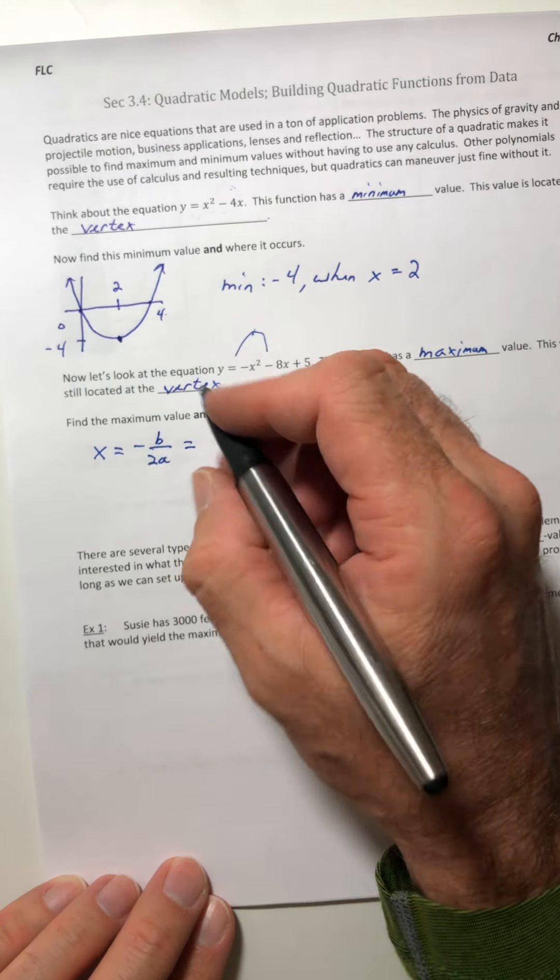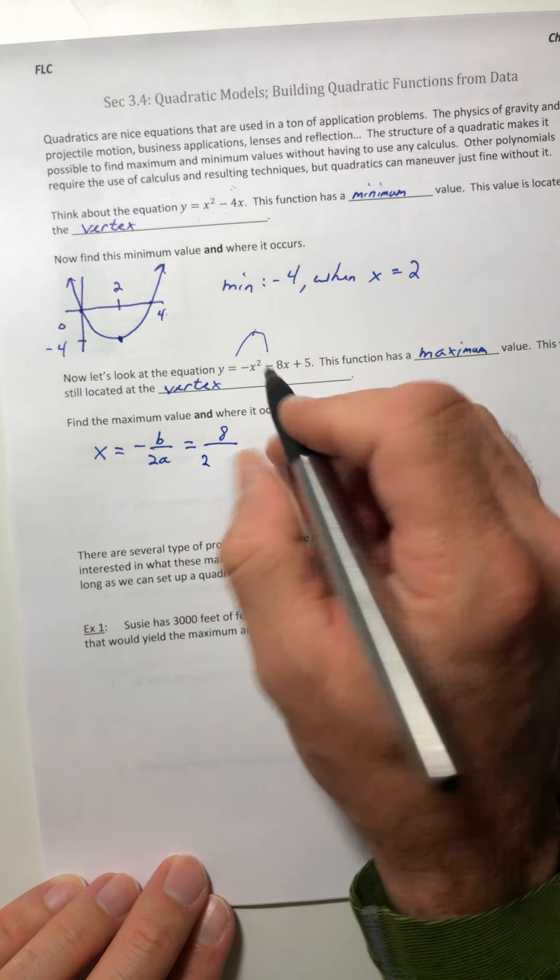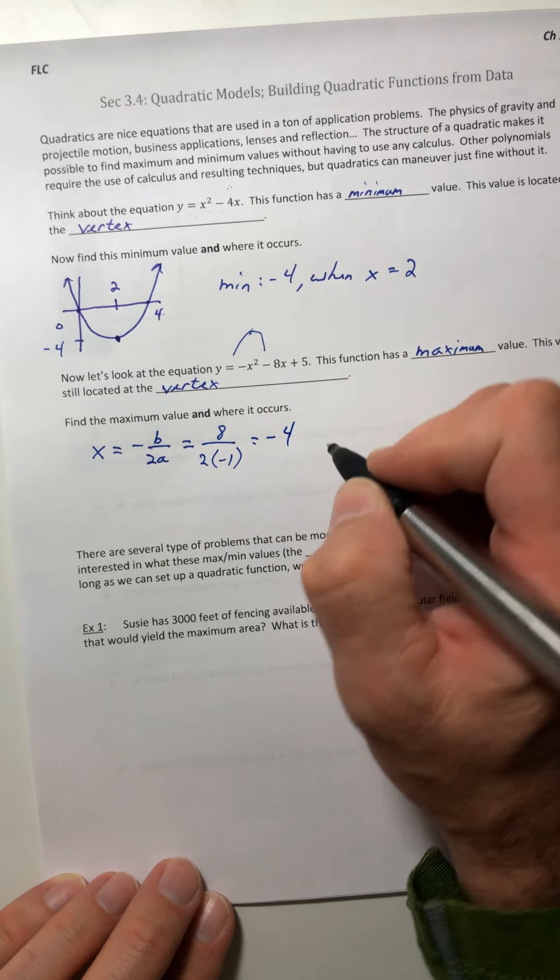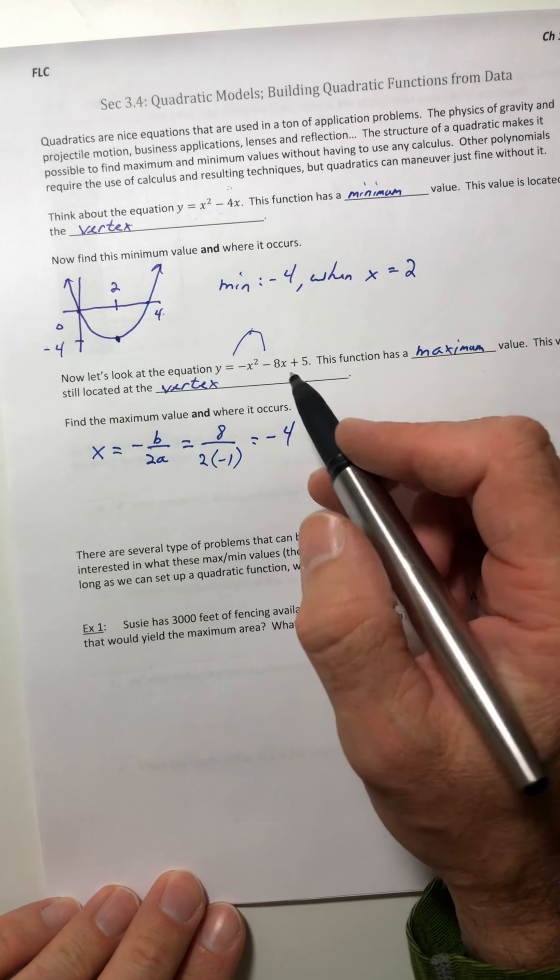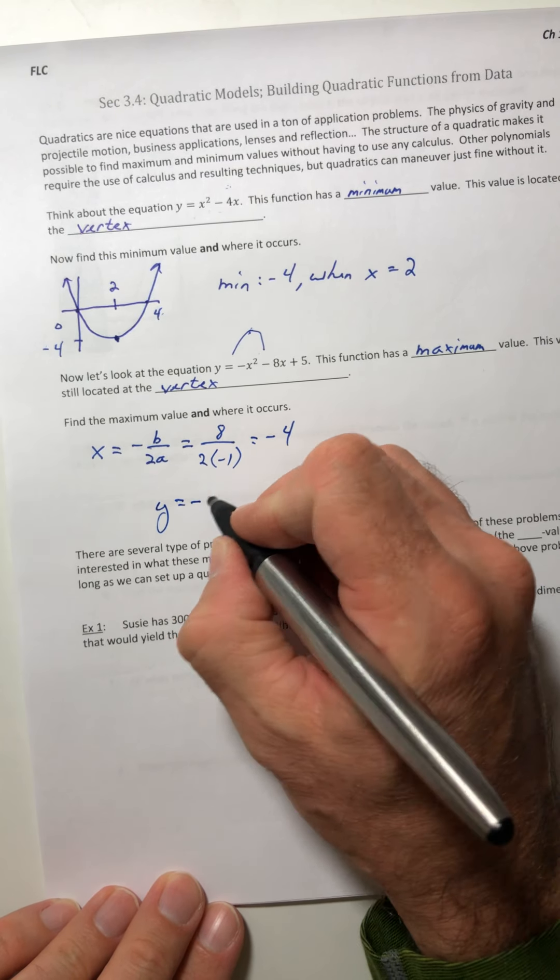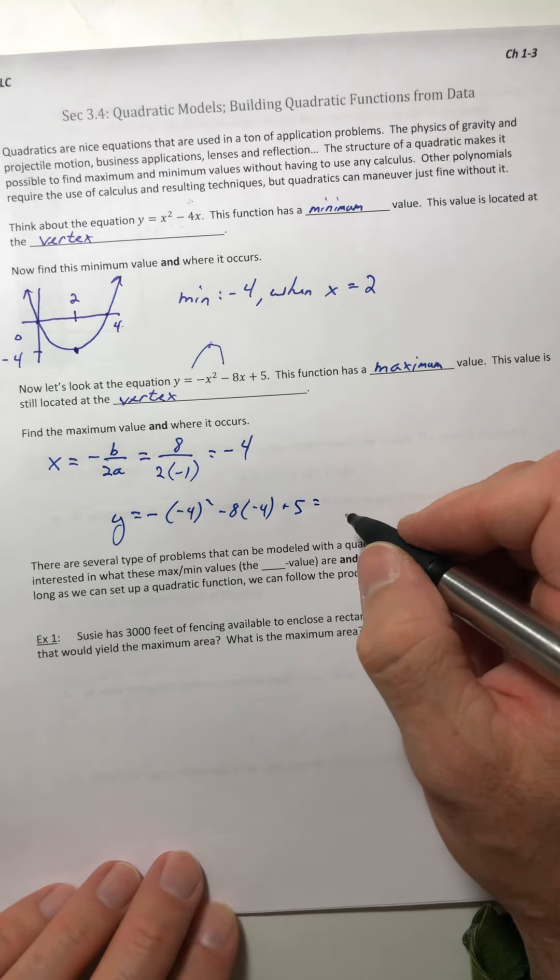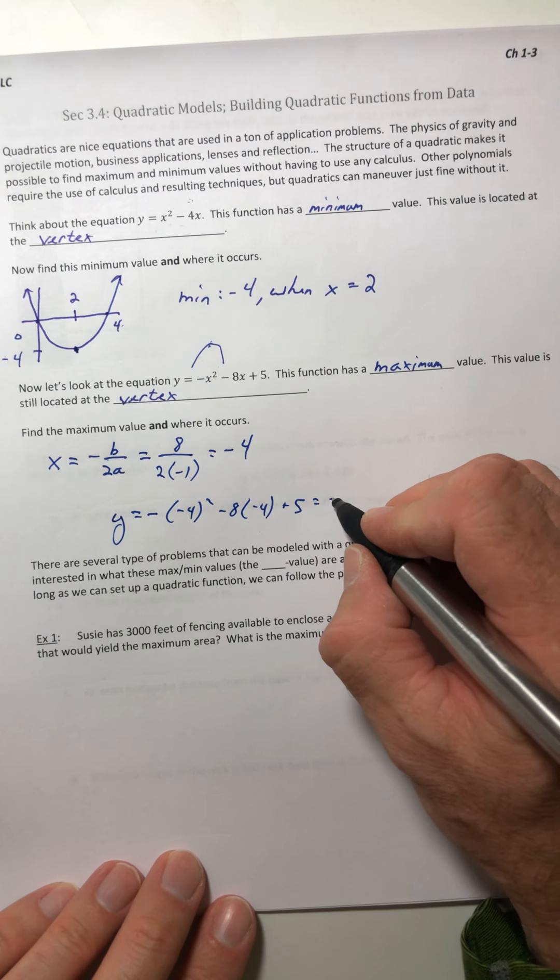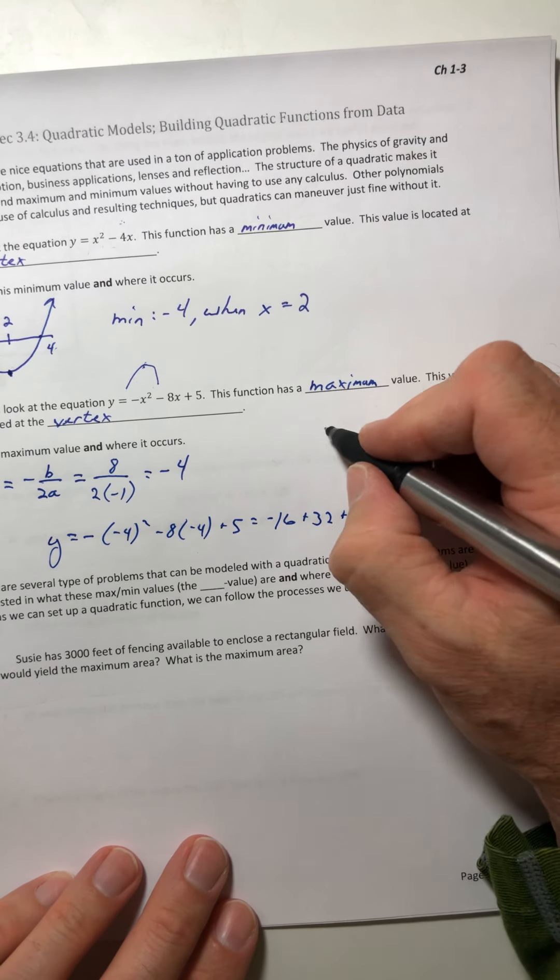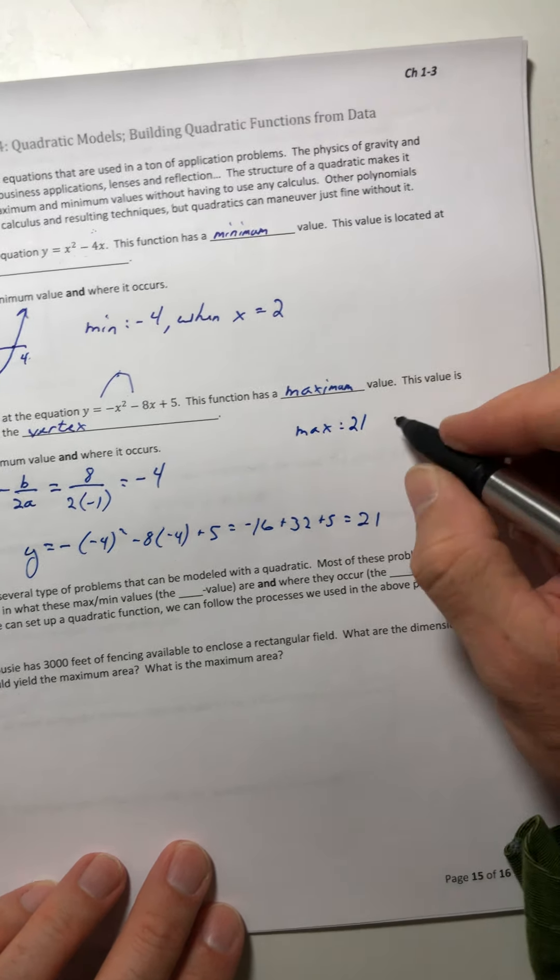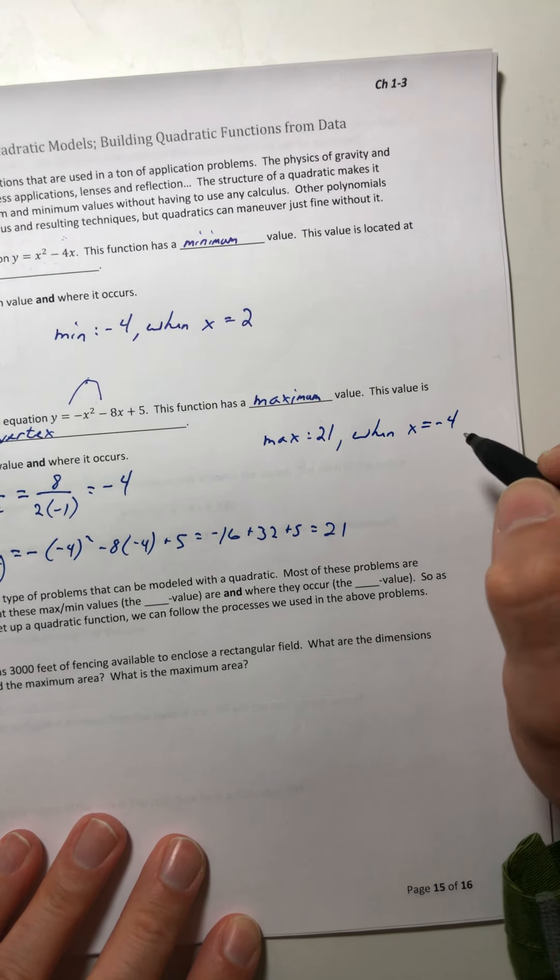So the b value is negative 8. So negative negative 8 is 8. And the a value is negative 1. So the x value is negative 4. So that's where it occurred. Now you've got to find the actual maximum value. So take your negative 4, plug it into the function. And work it out. So that would be negative 16 plus 32 plus 5 to give you 21. So your maximum was 21 when x was equal to negative 4.